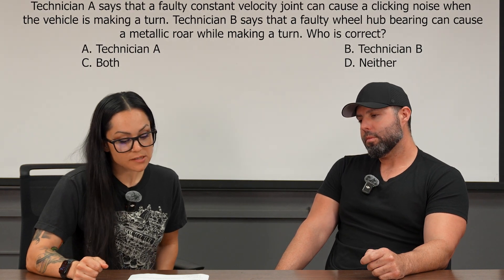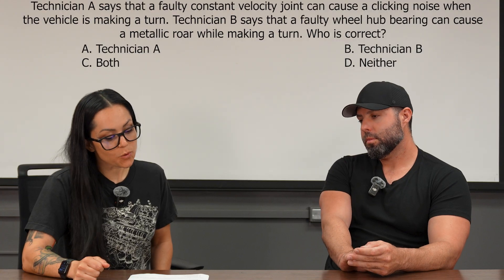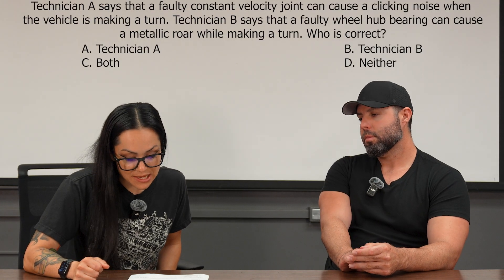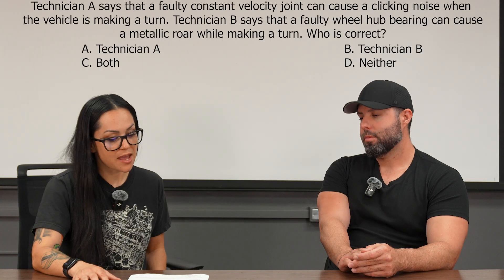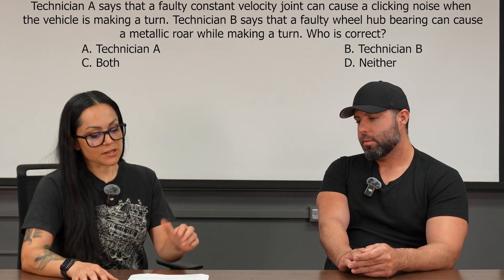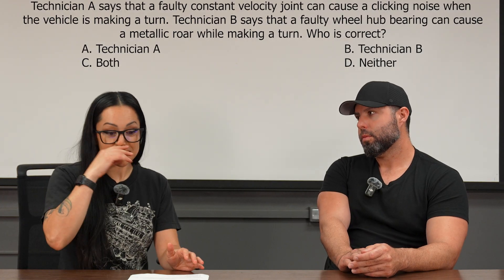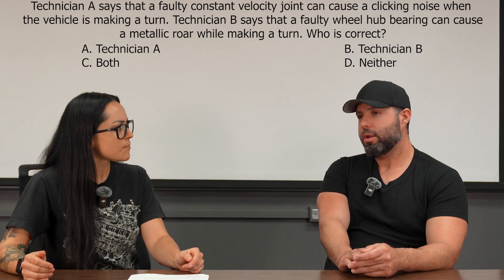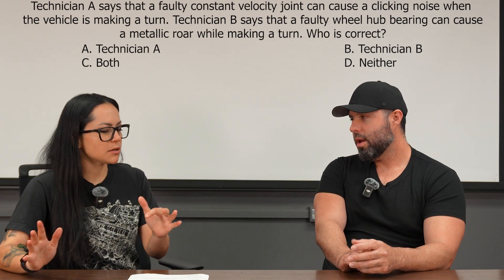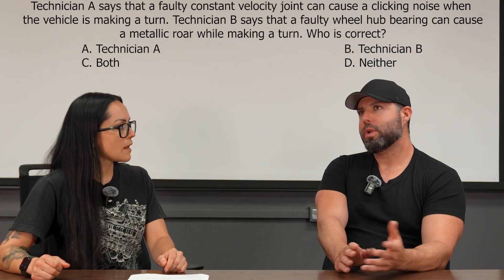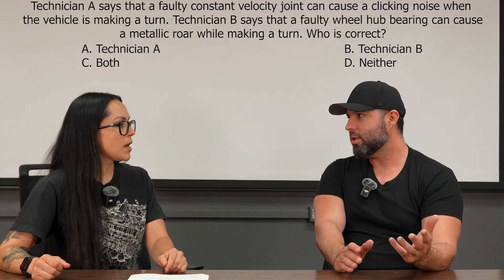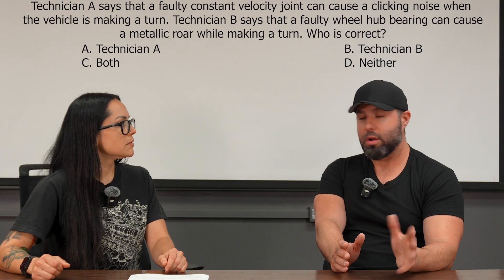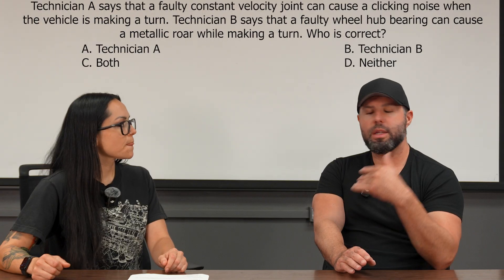Next question: Technician A says that a faulty constant velocity joint, or CV joint, can cause a clicking noise when the vehicle is making a turn. Technician B says that a faulty wheel hub bearing can cause a metallic roar while making a turn. Who is correct? We've all heard of the clicking CV joint, especially when making a turn. Generally the clicking comes from the opposite side of the way you're turning. You go to a cul-de-sac, turn the wheel all the way in one direction, accelerate, put a little torque — you're going to audibly hear which side it's from.